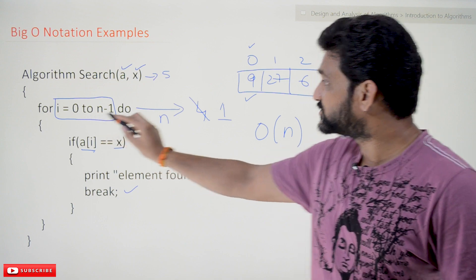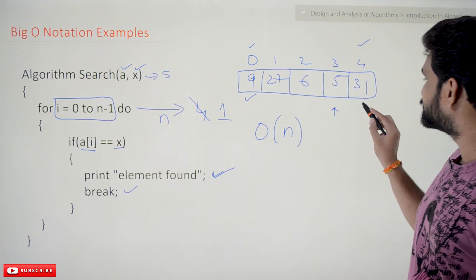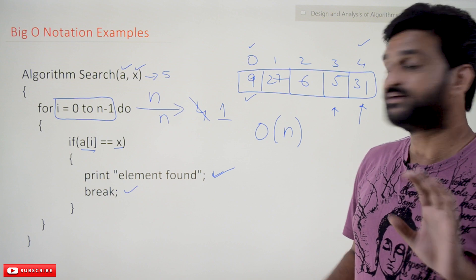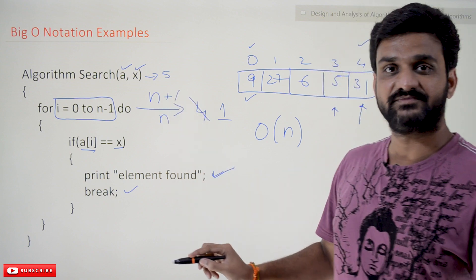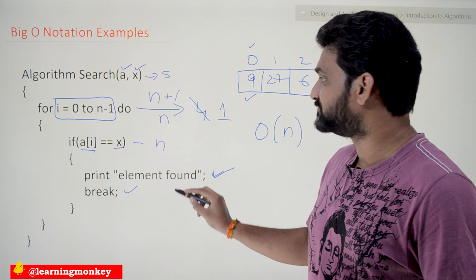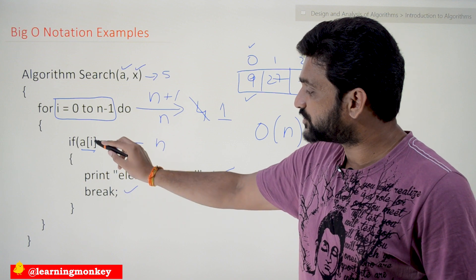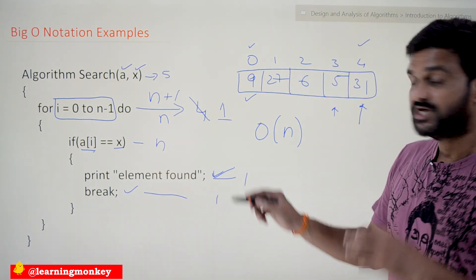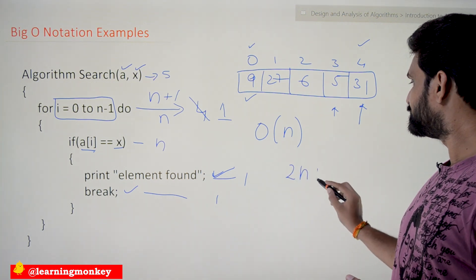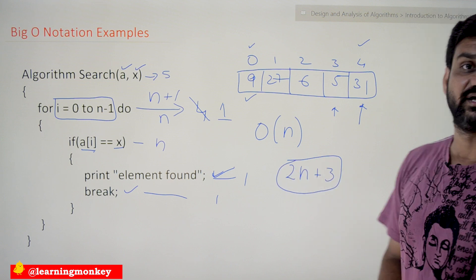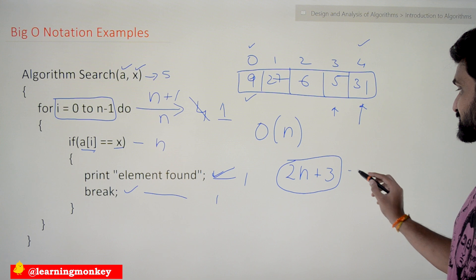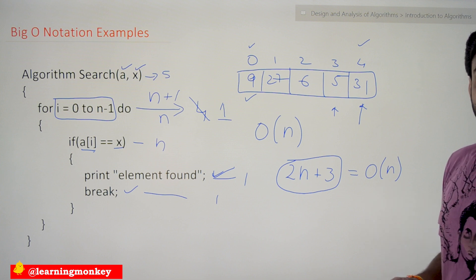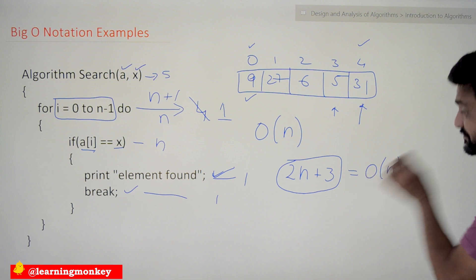What is the time complexity for this? In the worst case — let's assume we are trying to search for 31 — this for loop condition is going to iterate n plus 1 number of times, and the body is going to iterate n number of times. We come into the function body only once, and the last statements will get executed only once. So the total number of times — the efficiency of the time complexity of this algorithm — is 2n plus 3. This can be represented as Big O of n.